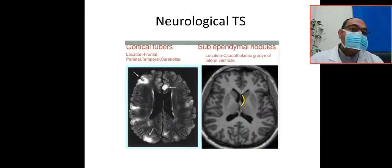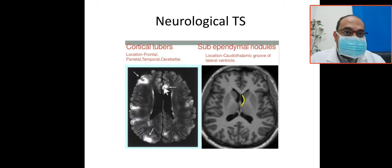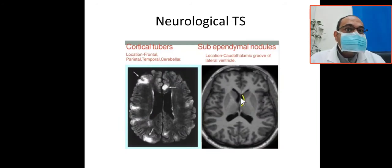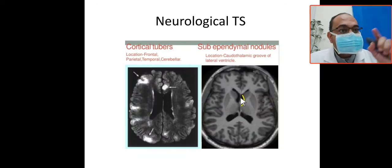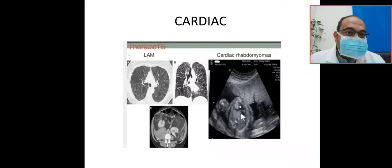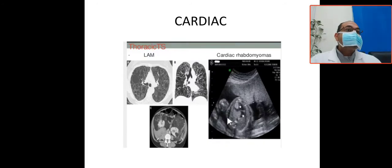Neurologically, tuberous sclerosis presents with cortical tubercles located in the frontal and temporal areas, and also in the subependymal or caudate-thalamic area. Cardiac manifestations include cardiac rhabdomyomas, which are part of the visceral syndrome or visceral tumor component of phakomatosis.